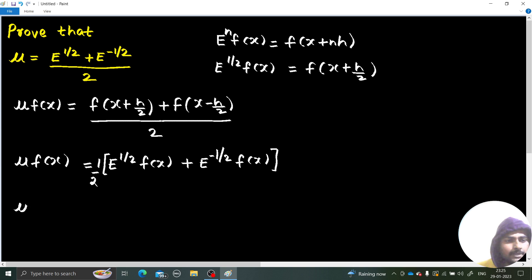So now mu operating on fx is, we always write operators on the left-hand side or the operators first followed by the operand. So half E power half plus E power minus half, and this is operating on fx.